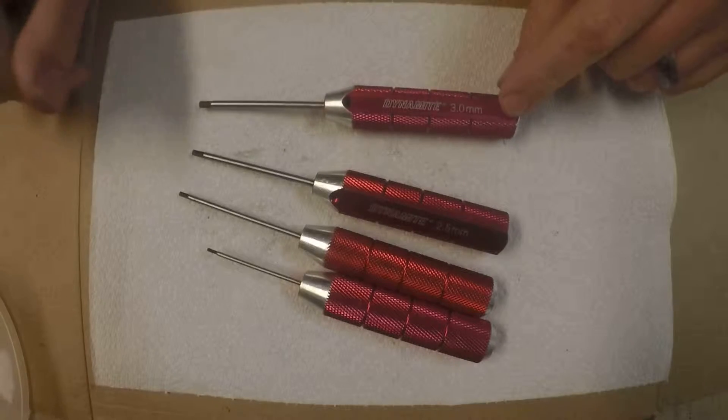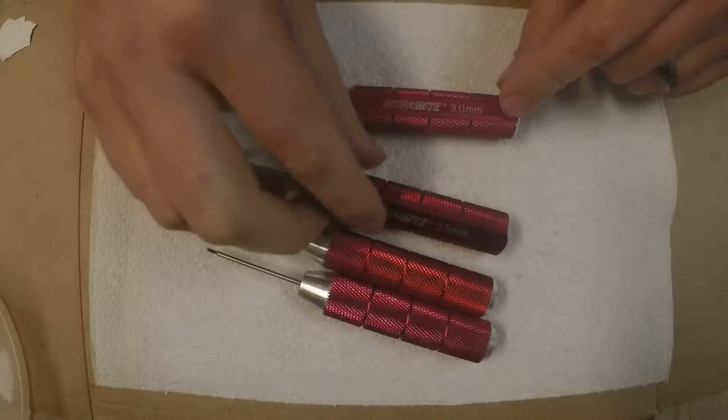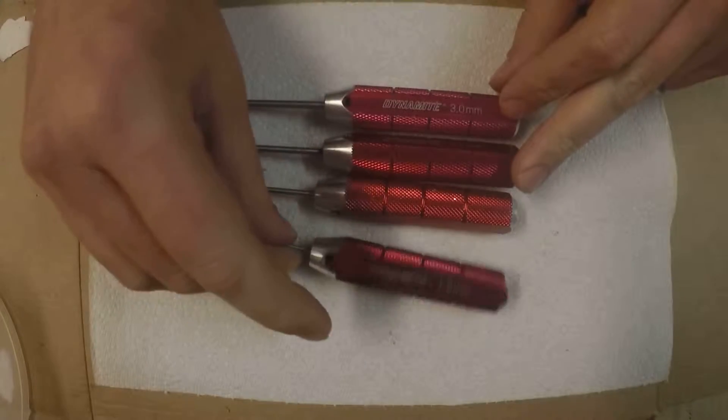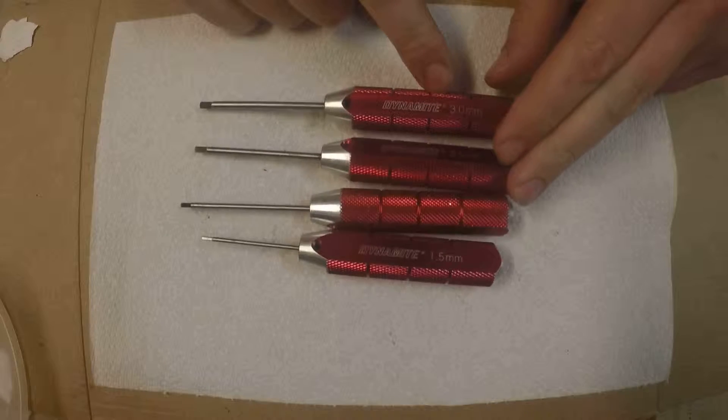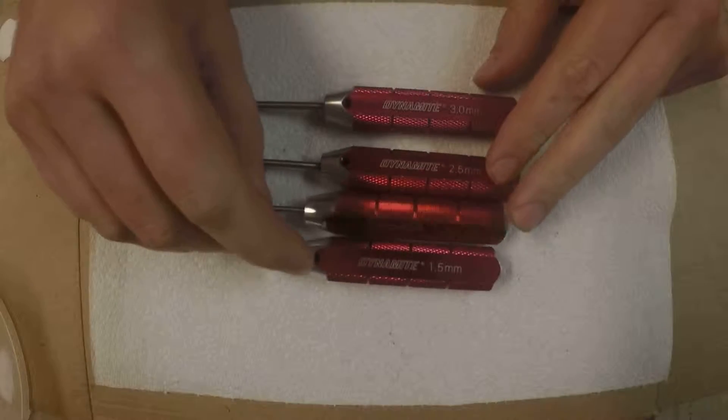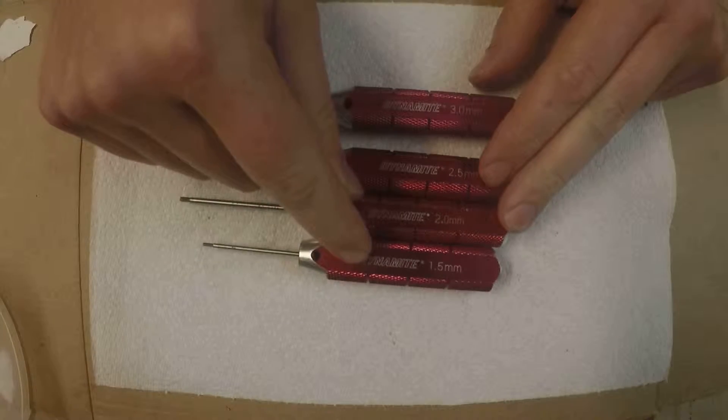You can get like a pack of three on Amazon that has most of them, but I think you have to get one of them separately. Definitely get a 3mm, a 2.5mm, a 2mm, and a 1.5mm.